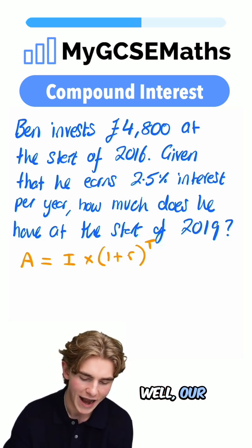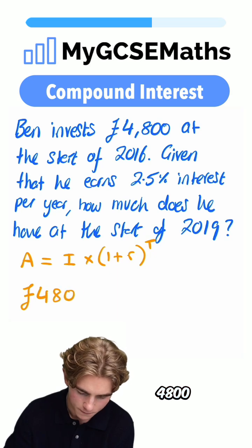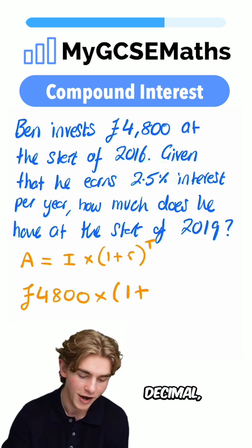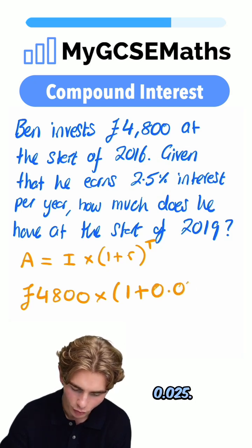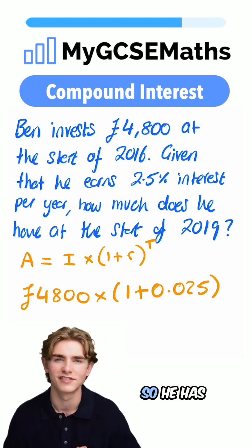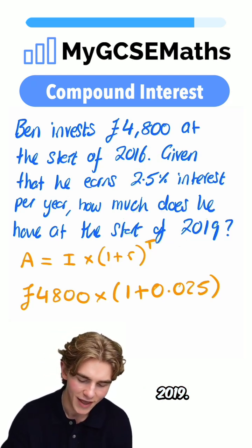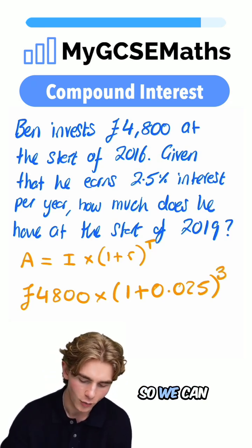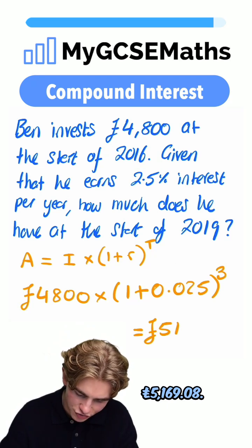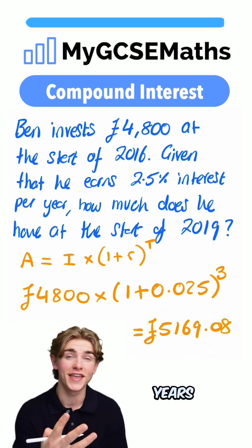So in this situation, our initial amount is £4,800, multiplied by 1 plus 0.025 — that's 2.5% written as a decimal by dividing by 100. Our number of time periods: he starts at the start of 2016, so we have 2016, 2017, and 2018 earning interest at the start of 2019 — that's three years. Plugging this into our calculator, we get £5,169.08. That is how much we have after those three years have gone by.